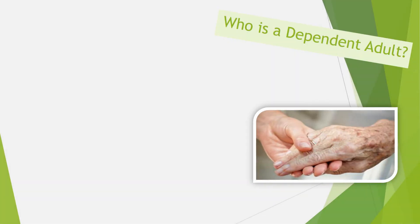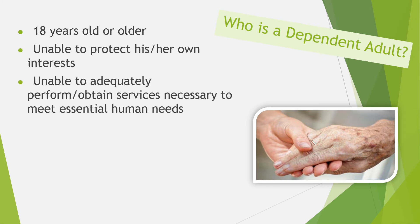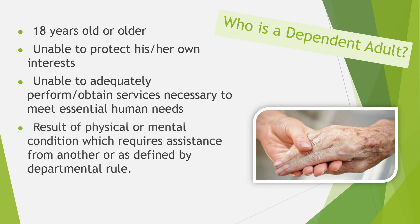Who is a dependent adult? A dependent adult refers to a person 18 years of age or older who is unable to protect his or her own interests, or is unable to adequately perform or obtain services necessary to meet essential human needs as a result of a physical or mental condition which requires assistance from another, or as defined by departmental rule.